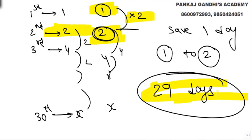Had we started from four bacteria, we would have saved two days and the answer would be 28 days. But if we start from two, we save just one day — one to two — so the answer is 29 days.